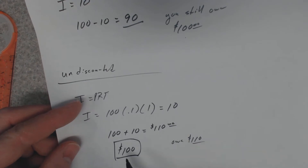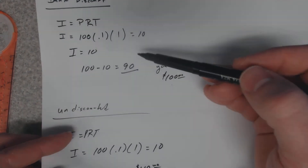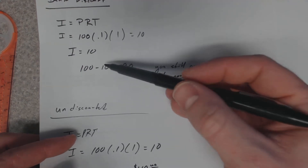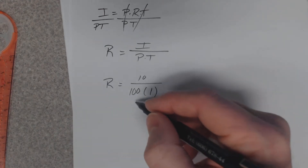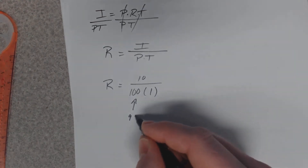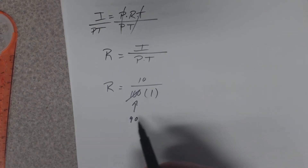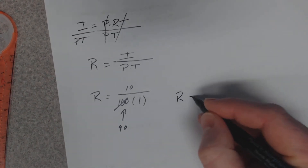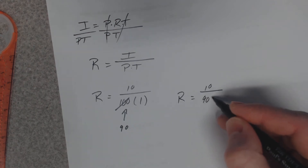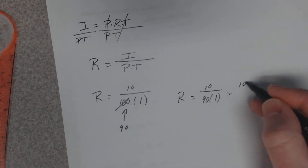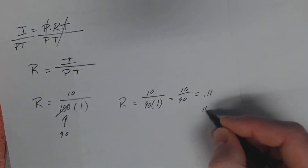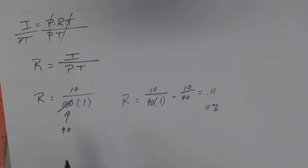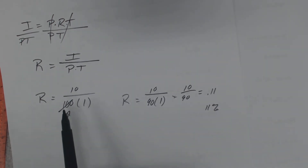The interest rate is not 10% in the bank discount case, because you didn't get to use the full $100 — you only got to use $90. So the principal in the rate formula is 90, not 100. Your rate is 10 divided by 90 times 1, which is 10 over 90. That equals 0.1111 repeating, so the effective interest rate is actually 11%.